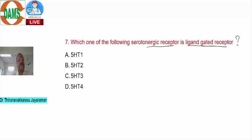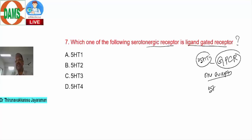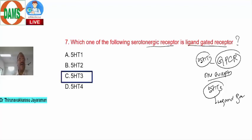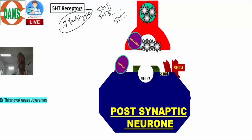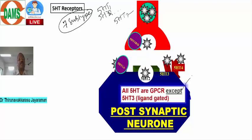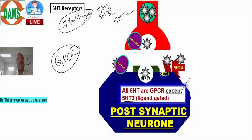Next question: which serotonergic receptor is a ligand-gated receptor? Options: 5-HT1, 5-HT2, 5-HT3, 5-HT4. Remember: all serotonin receptors are G-protein coupled receptors, with one exception — 5-HT3, which is a ligand-gated receptor. So the answer is option C: 5-HT3. There are seven subtypes of serotonin receptors (5-HT1 through 5-HT7).